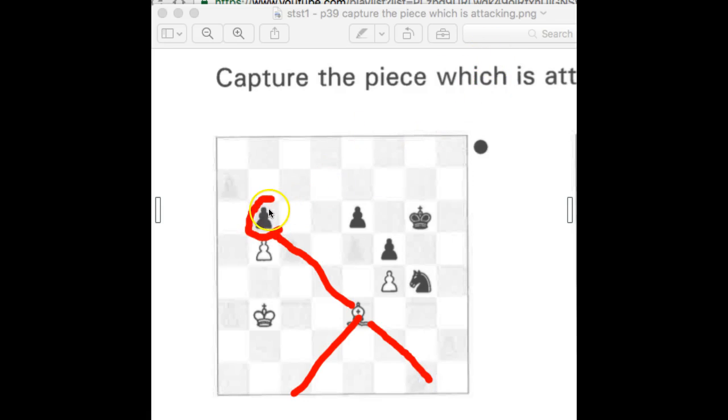So how can we stop it? The pawn can't move away and we can't move anything to protect the pawn. So our move is to capture with the knight, capturing the bishop that's attacking.